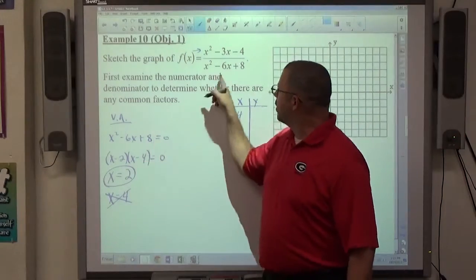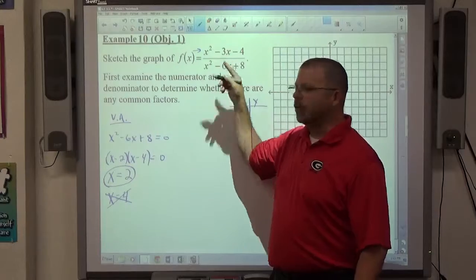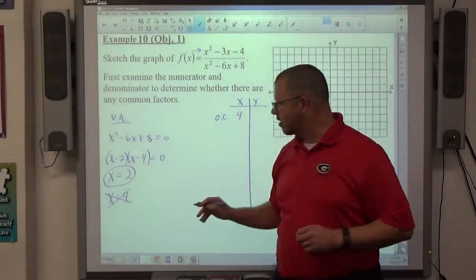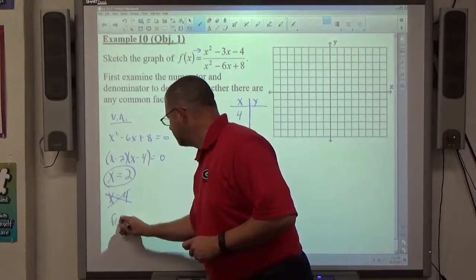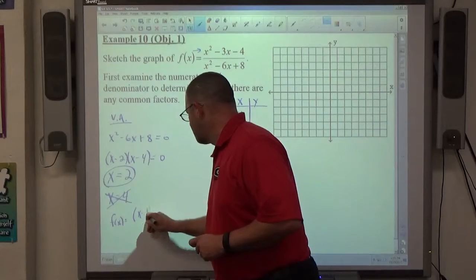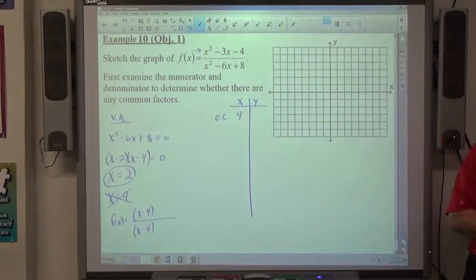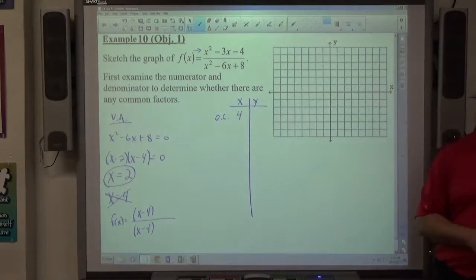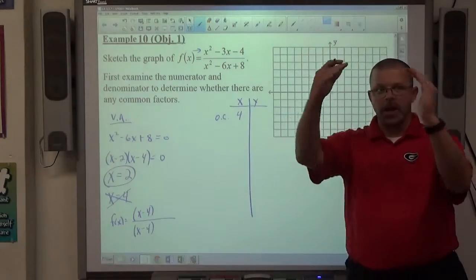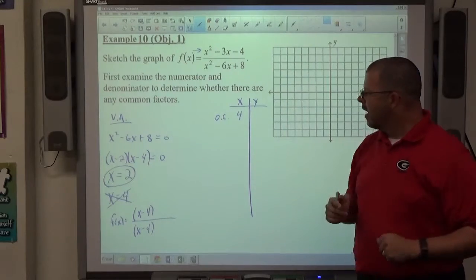If 4 makes the bottom equal to 0 and 4 makes the top equal to 0, that means they both have in factored form (x - 4) as a factor. Okay, they're polynomial functions. If 4 makes the thing equal 0, x - 4 is a factor.